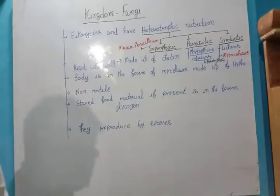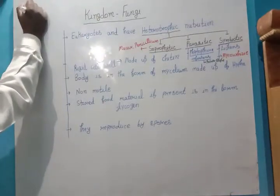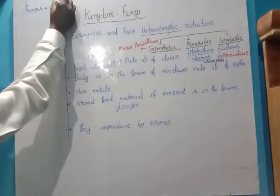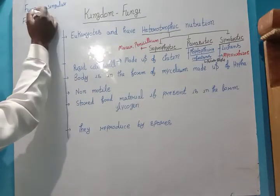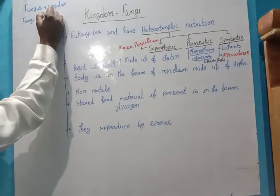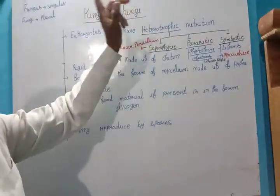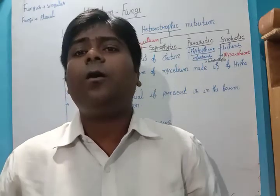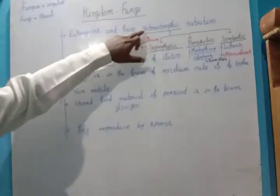First, all fungi are eukaryotes. Note that 'fungus' is singular and 'fungi' is plural — don't be confused, as both terms will come up again and again. In the kingdom Fungi, all members are eukaryotes. Except for Monera, all other kingdoms in Whittaker's system are eukaryotes.